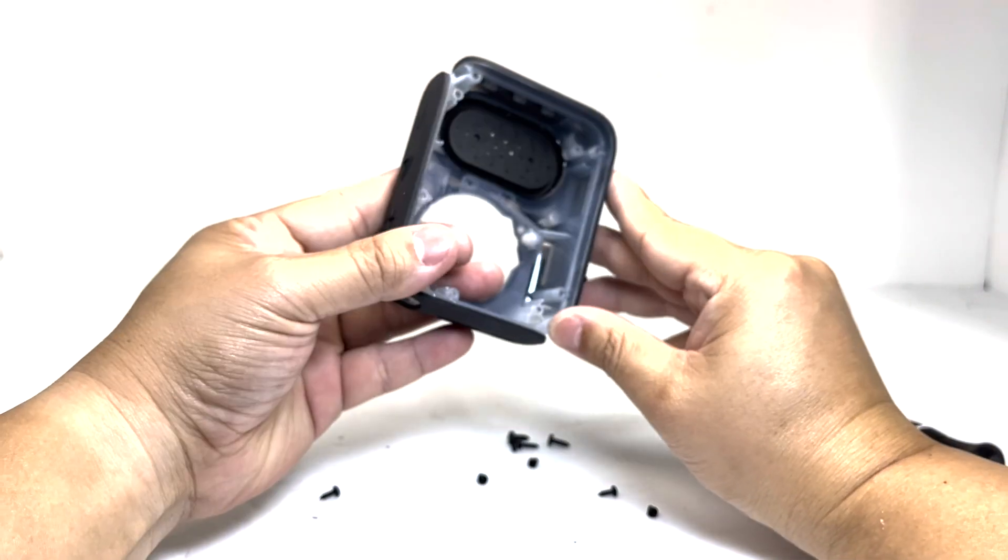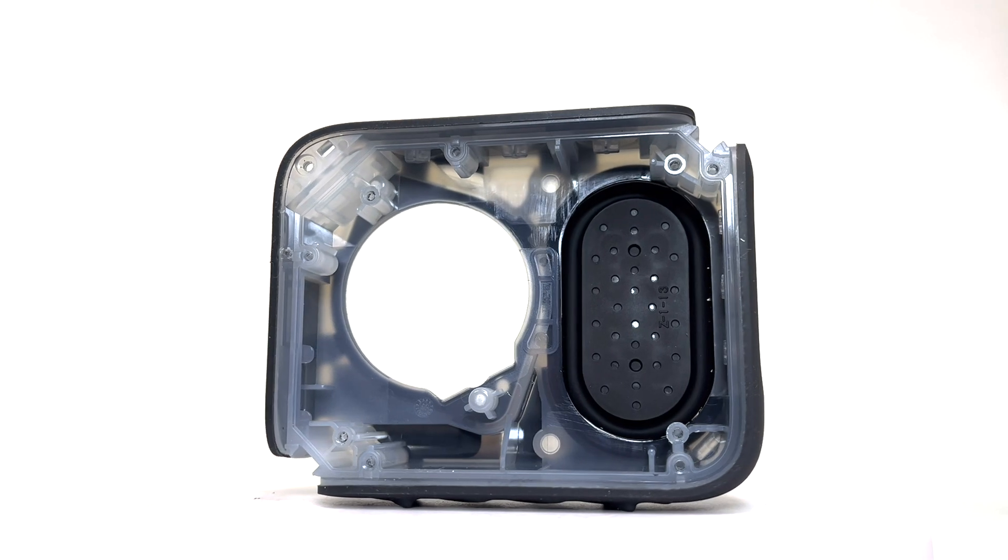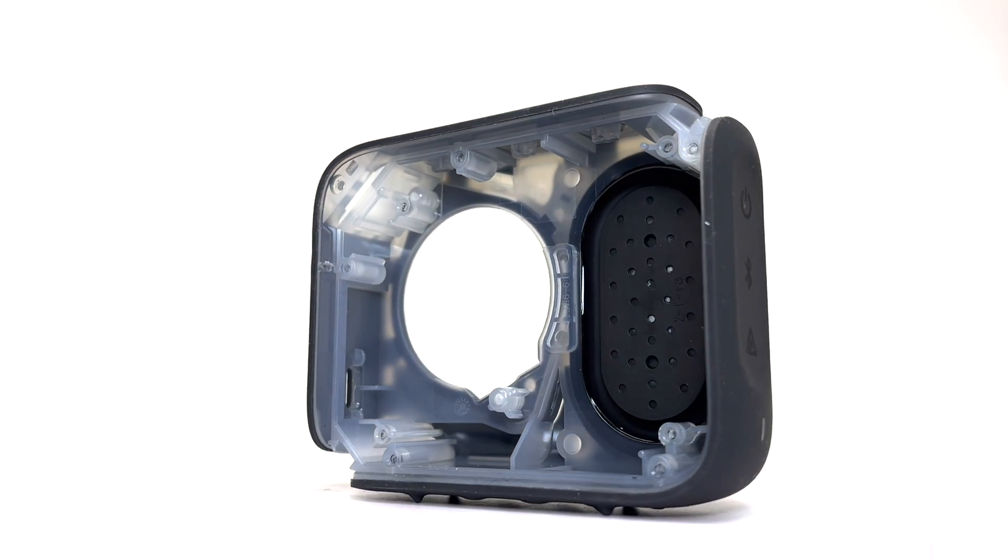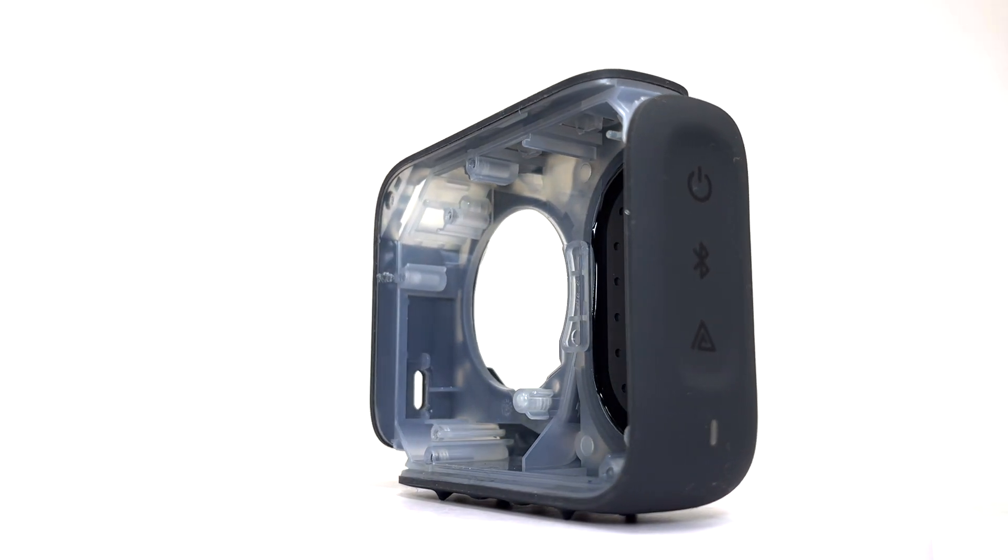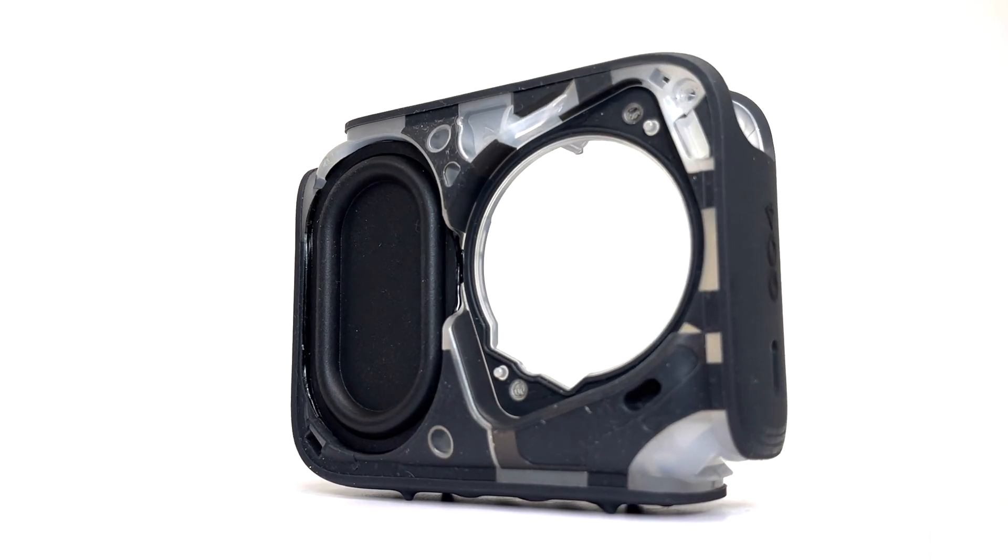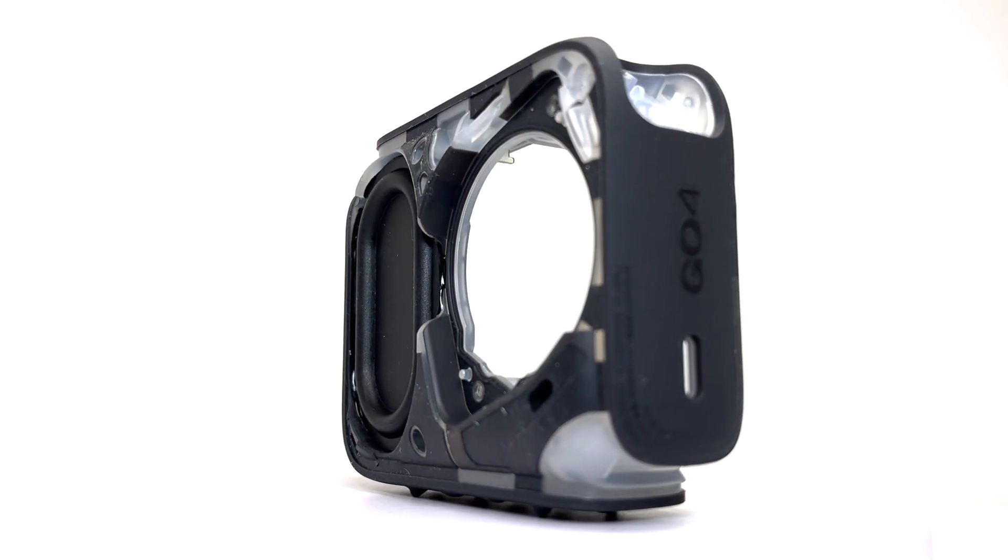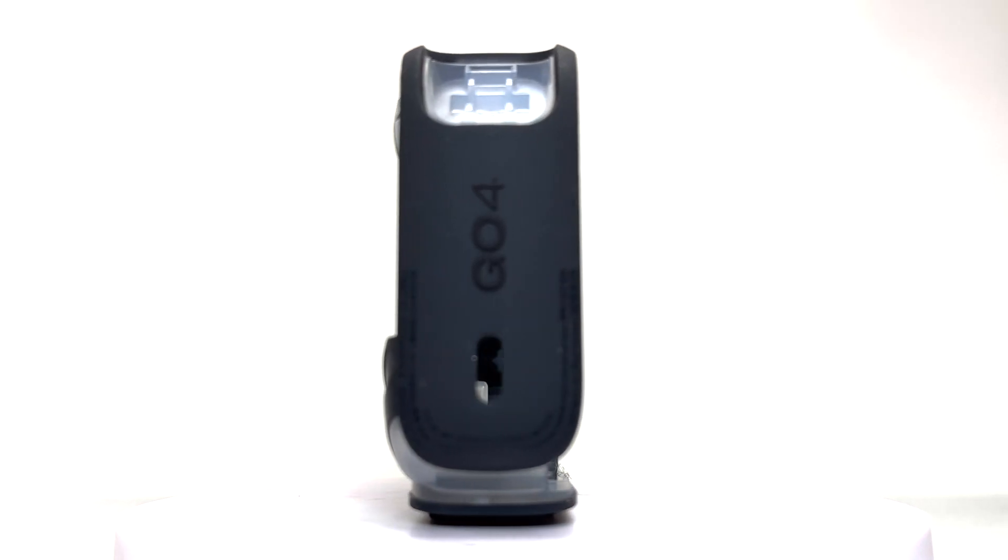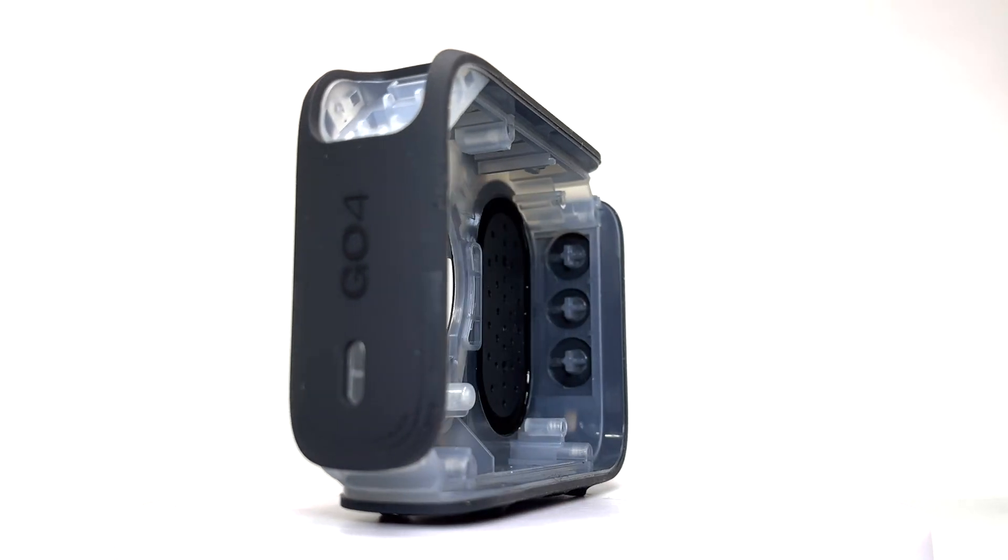And here we have the main body enclosure. It is sturdy and well built, featuring rubberized sidings on all sides for added durability and grip. The passive radiator is securely attached to the body, contributing to its robust construction. Overall, the enclosure is well engineered and designed to withstand prolonged use, ensuring longevity and reliable performance.